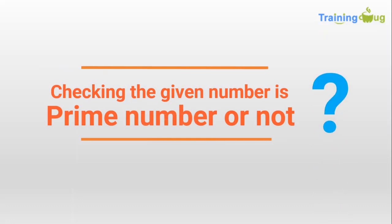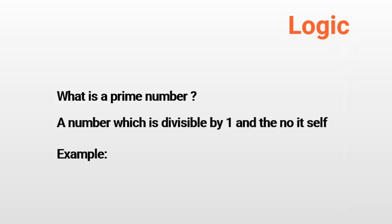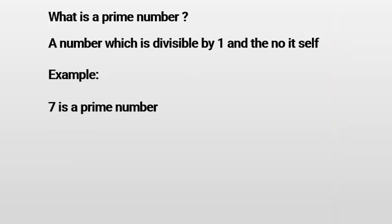First let us understand the logic. What is a prime number? A number which is divisible by 1 and the number itself is called a prime number. For example, we'll take 7. How do you say a number is divisible by another number? The remainder must be 0. When you say 7 remainder 1, that is 0, so it is divisible by 1.